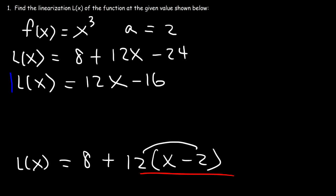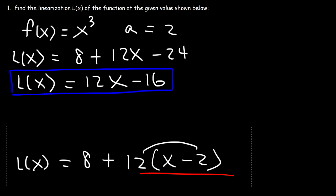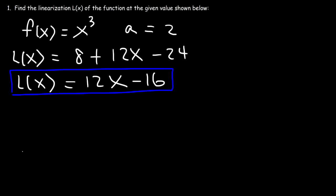So this is the linearization of the function when a is 2. So that's the equation of the tangent line when x is 2. Now, one good thing of linearization is it helps us to approximate certain values. For instance, let's say if we wanted to calculate or estimate the value of 1.99 raised to the third power.